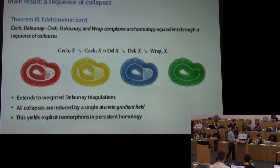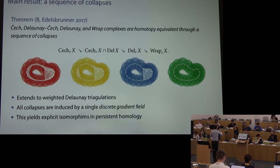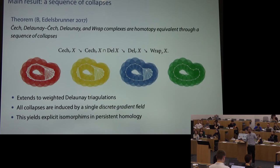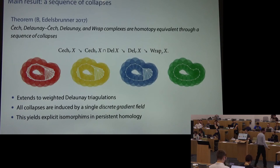This is all encoded in a single combinatorial description called a discrete gradient field, which comes from discrete Morse theory. This also extends to weights on points — weighted Delaunay triangulations — and these connections carry over to persistent homology, giving very explicit connections between persistence modules. We can code the connection: describe something on the level of Čech complexes and then algorithmically project a cycle in the Čech complex down to a cycle in the Delaunay or wrap complex.